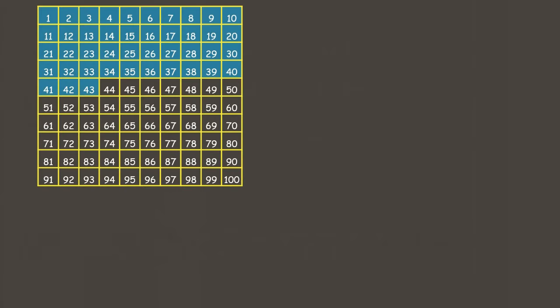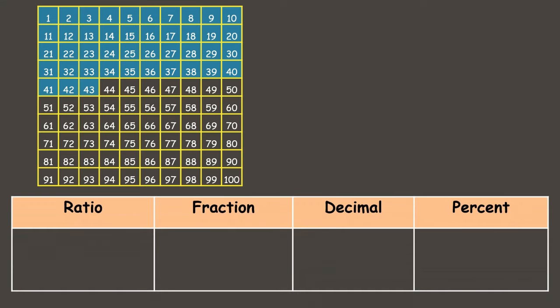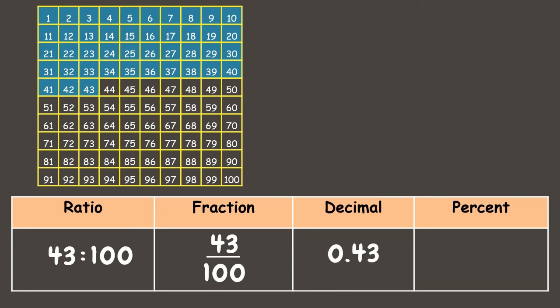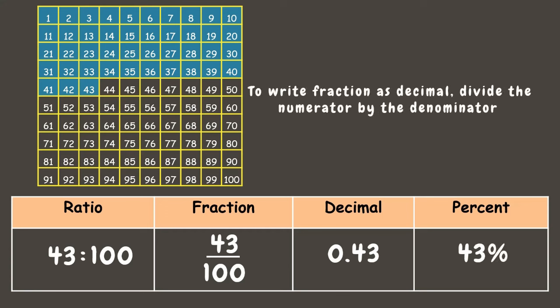Let's have another example. Here is a figure with 100 parts where 43 parts are shaded. Let's represent the shaded part in ratio, fraction, decimal, and percent. In ratio, we compare the 43 shaded parts to the total of 100 parts, giving us 43 is to 100. In fraction, that is 43/100. In decimal, since the fraction is 43/100, we write it as 0.43. In percent, it will be 43 percent.